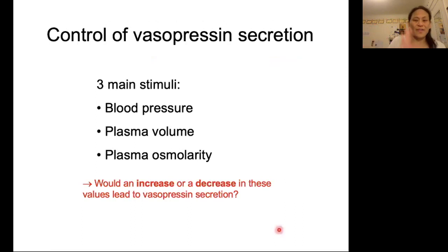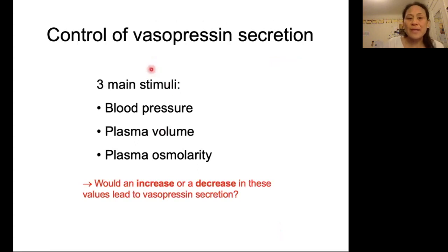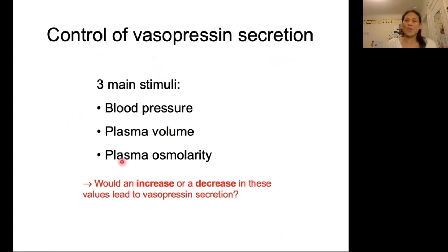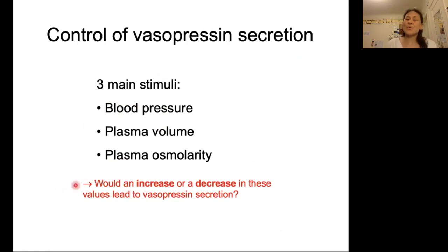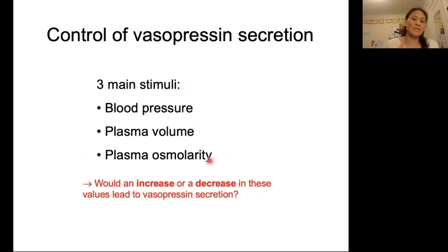Now let's talk about when vasopressin is secreted. We have three main stimuli for vasopressin secretion: blood pressure, plasma volume, and plasma osmolarity. Take a moment to consider: would an increase or a decrease in each of these variables lead to vasopressin secretion? Hit pause, think about that, and we will come back to it.